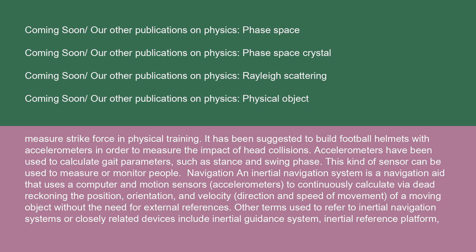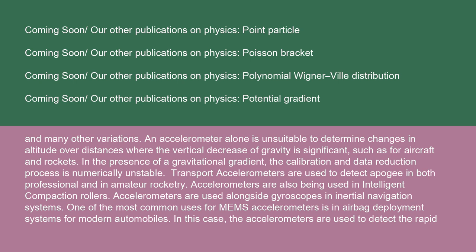An Inertial Navigation System is a navigation aid that uses a computer and motion sensors (accelerometers) to continuously calculate via dead reckoning the position, orientation, and velocity — direction and speed of movement — of a moving object without the need for external references. Other terms include inertial guidance system, inertial reference platform, and many other variations. An accelerometer alone is unsuitable to determine changes in altitude over distances where the vertical decrease of gravity is significant, such as for aircraft and rockets. In the presence of a gravitational gradient, the calibration and data reduction process is numerically unstable. Accelerometers are used to detect apogee in both professional and amateur rocketry and are also used in intelligent compaction rollers, as well as alongside gyroscopes in inertial navigation systems.